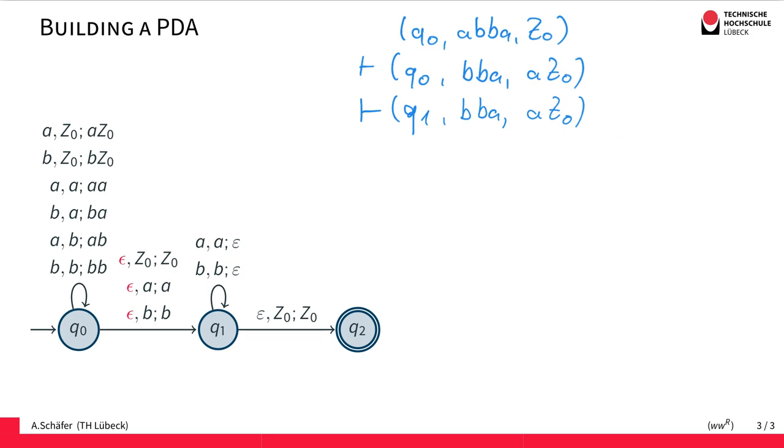So this won't work. However, our non-deterministic PDA accepts if there is an accepting run, and I've shown you that there is an accepting run if we choose correctly. So this PDA actually accepts the language of palindromes of even length.